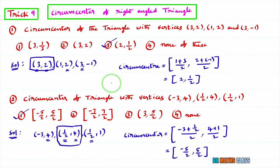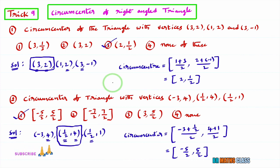In this trick, two things you need to know. First, when observing the vertices of a triangle, if any two x-coordinates and any two y-coordinates are equal, then those vertices form a right-angled triangle. Second, in a right-angled triangle, the circumcenter is the midpoint of the hypotenuse. I hope you understand this trick.